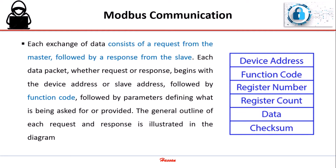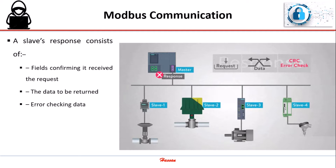Each exchange of data consists of a request from the master followed by a response from the slave. Each data packet, whether request or response, begins with the device address or slave address, followed by function code, followed by parameters defining what is being asked for or provided. The general outline of each request and response is illustrated in the diagram. A slave's response consists of the fields confirming it received the request, the data to be returned, and an error check field.